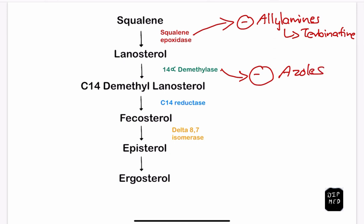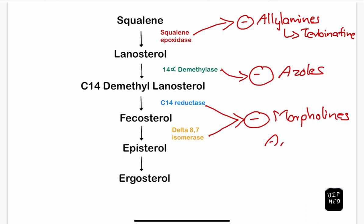The 14-alpha demethylase enzyme is inhibited by azoles such as luliconazole, miconazole, and others. The C-14 reductase and delta-8,7-isomerase enzymes are inhibited by morpholines, which include amorolfin. That concludes our discussion on dermatophytosis.